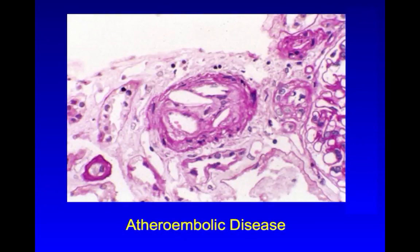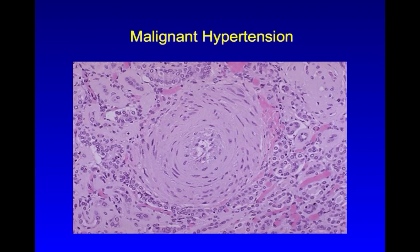Vascular causes of AKI include atheroembolic disease with obstruction of vessels by cholesterol-containing thrombi formed from broken-off pieces of atherosclerotic plaques. Another vascular disorder is malignant hypertension with damage to vessels from high arterial pressures, resulting in intimal proliferation and luminal blockage by platelet fibrin thrombi.